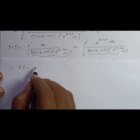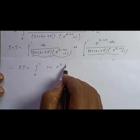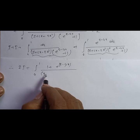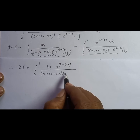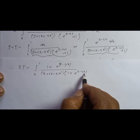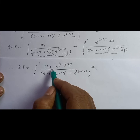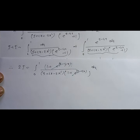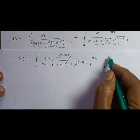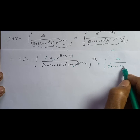Adding both expressions: 2I equals integration from 0 to 1 of (1 + e^(2-4x)) divided by (5 + 2x - 2x²)(1 + e^(2-4x)) dx, which simplifies to integration from 0 to 1 of dx divided by (5 + 2x - 2x²).